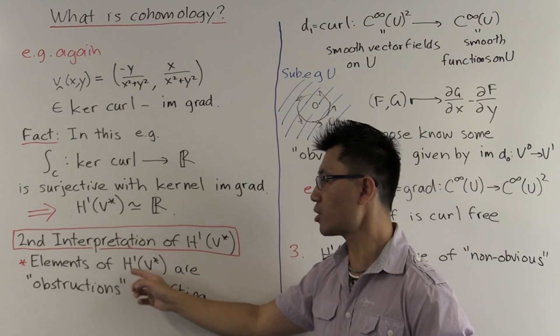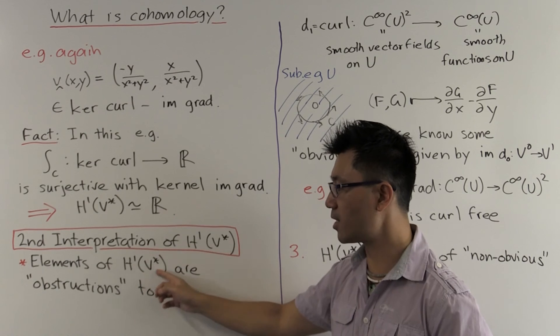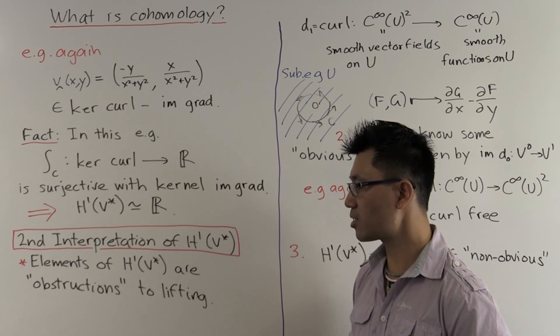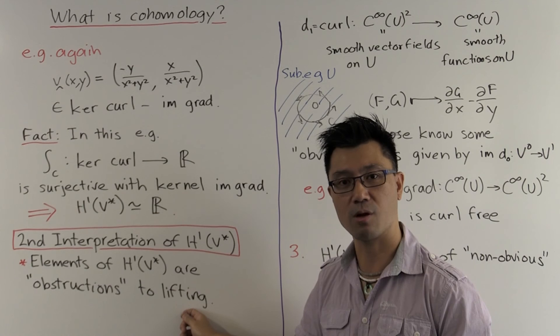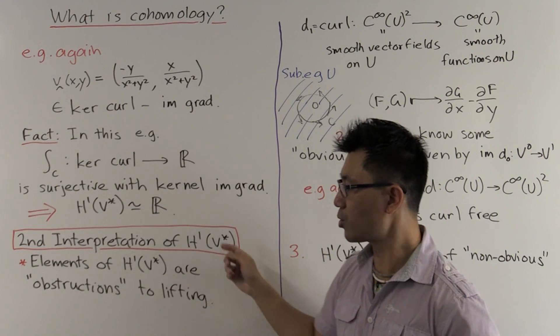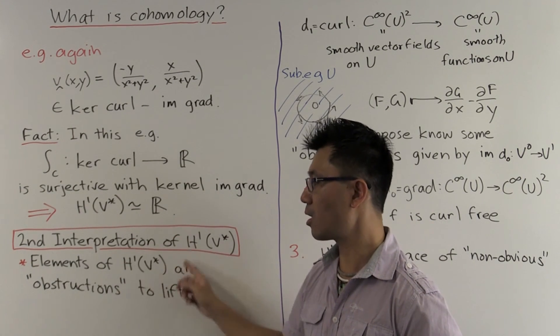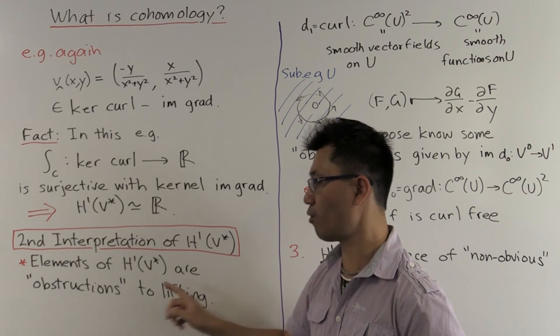So when the corresponding obstruction inside H1 V star vanishes, then you can lift to the image of that D0. And to a certain extent, this measures how you might fail from lifting.